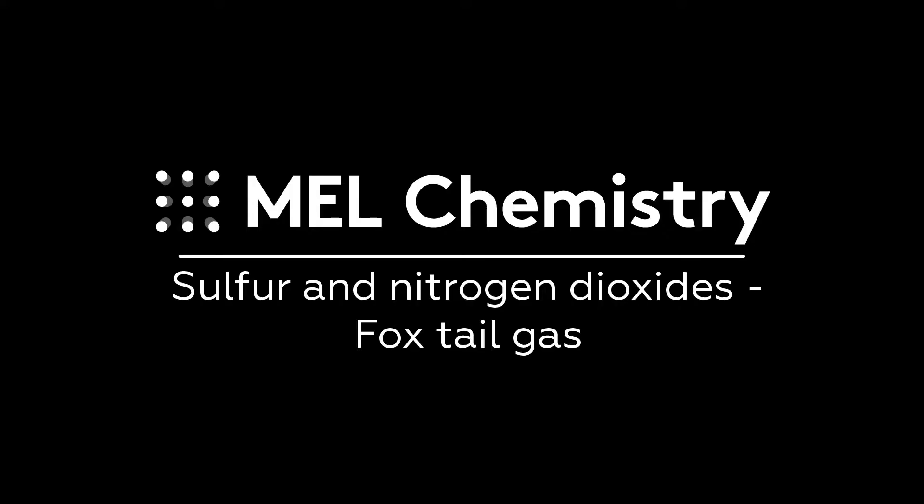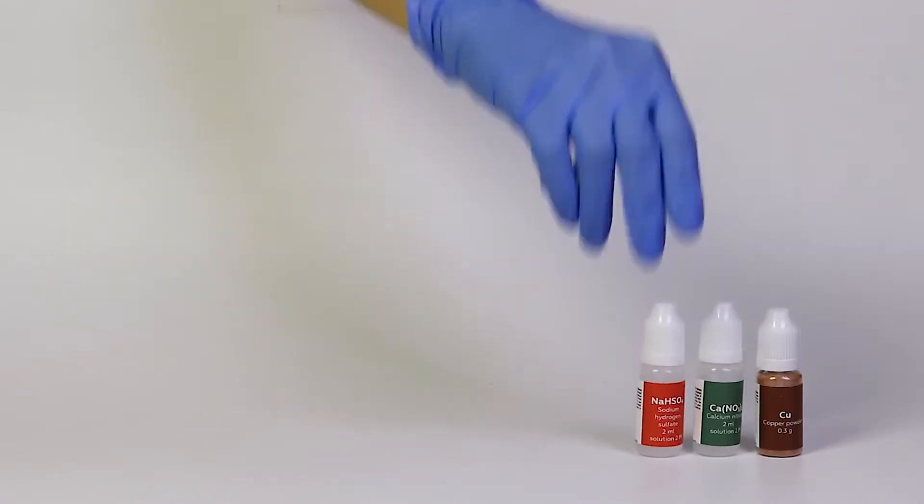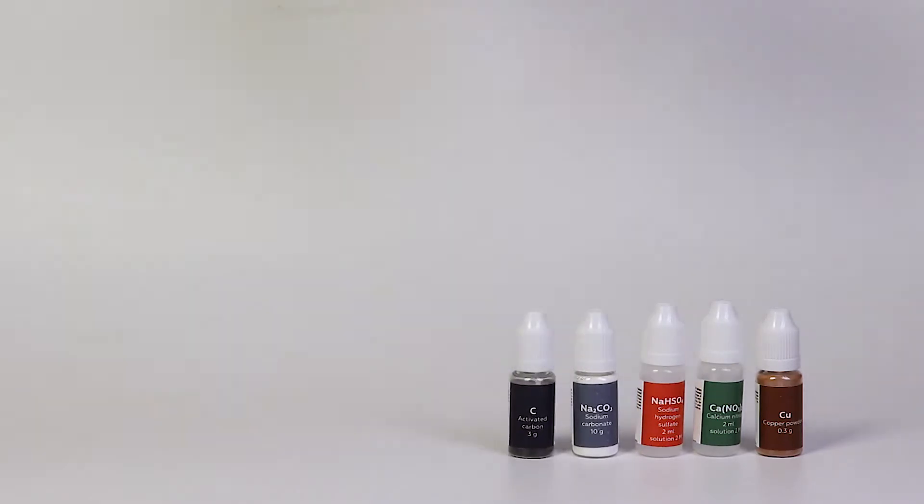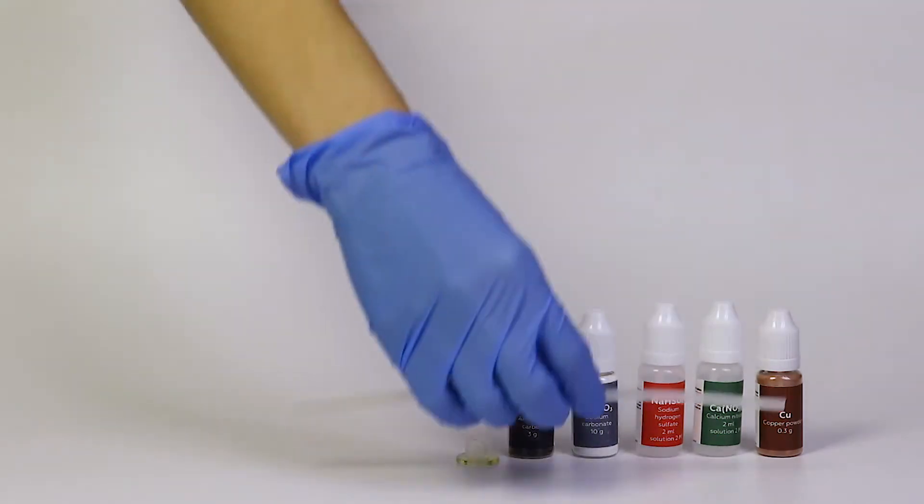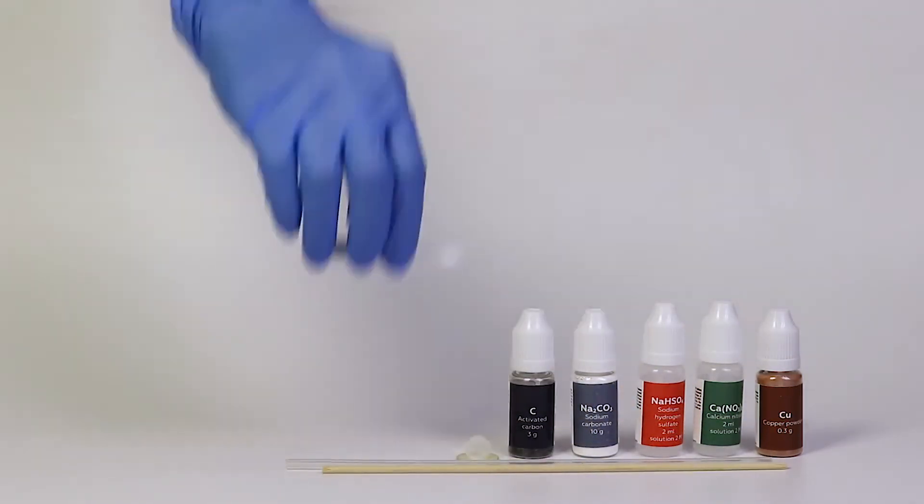For the foxtail gas experiment, you'll need copper powder, calcium nitrate and sodium hydrogen sulfate solutions, sodium carbonate, activated carbon, a plastic ring, a nozzle, a silicon tube, a wooden stick, and a measuring spoon.